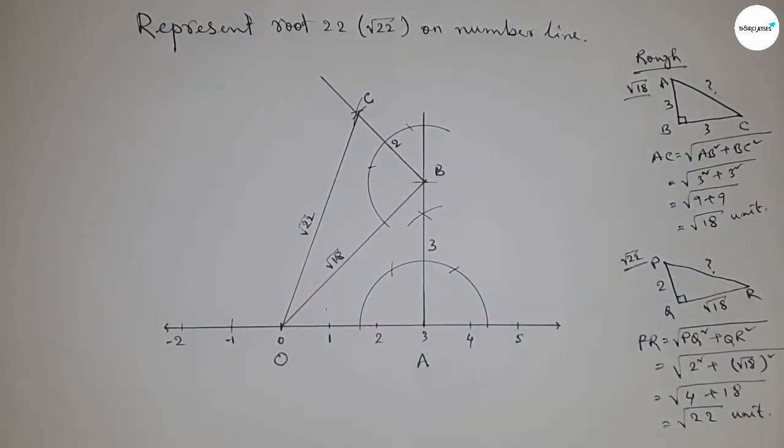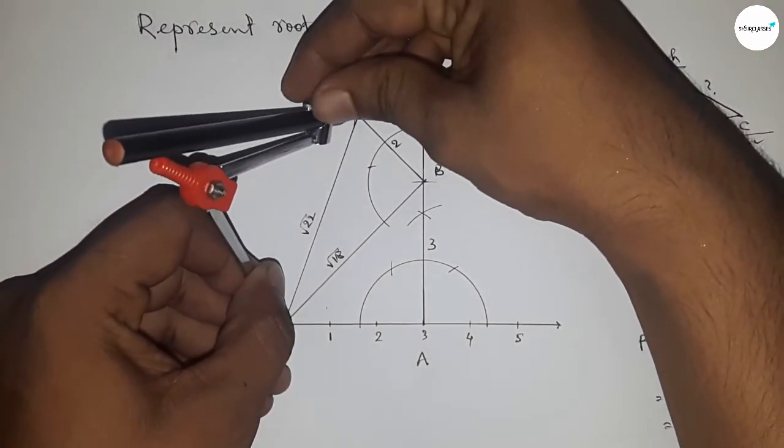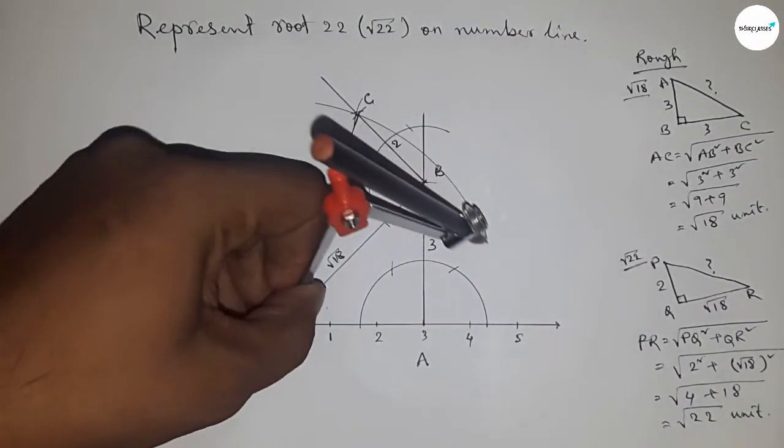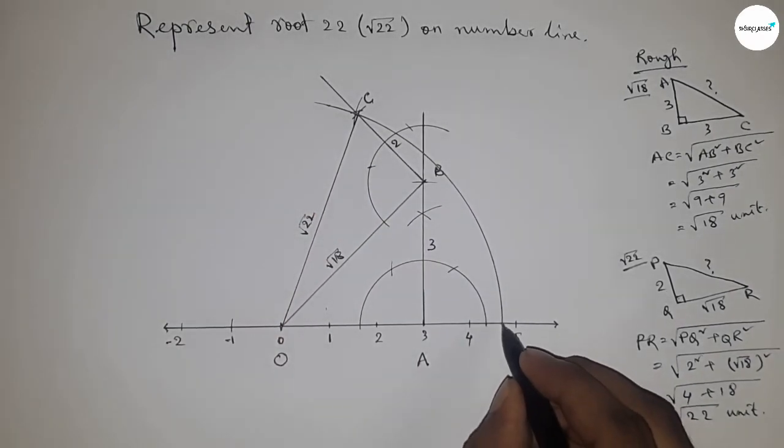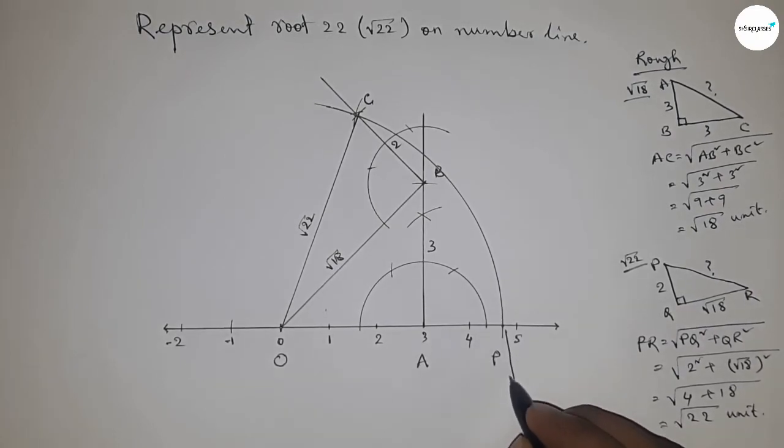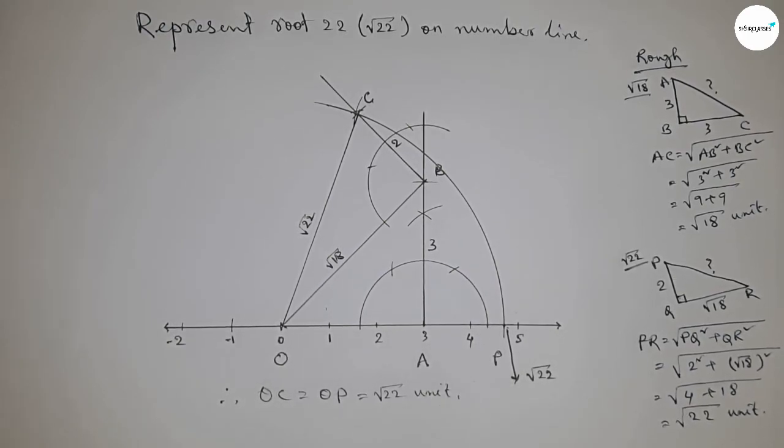Now taking the length OC by compass and drawing an arc which made the number line at a point. So this is P, and this is the representation of root 22 on a number line. So therefore, distance OC and OP are equal, so equal to root 22 unit.